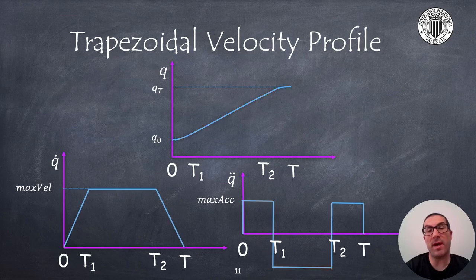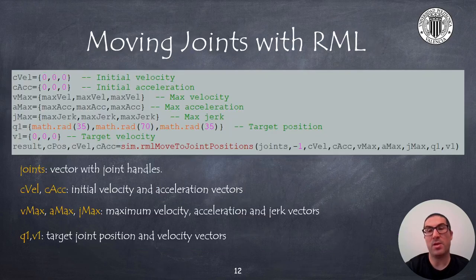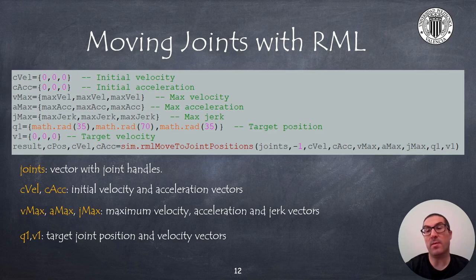This trapezoidal velocity profile is usually smoothed with an s-shaped profile where the jerk of the trajectory is non-infinite. But the RML library we are about to use does not allow to use these s-shape trajectories at least for now. To replicate this behavior in CoppeliaSIM we need to use the RML moveToJointPositions function that allows to move the robot joints from the current configuration to a target configuration. The first input argument of the function is a vector with joint handles to be moved. The second argument is a flag that by default we will leave to minus one to indicate that all joints movements are coordinated and synchronized.